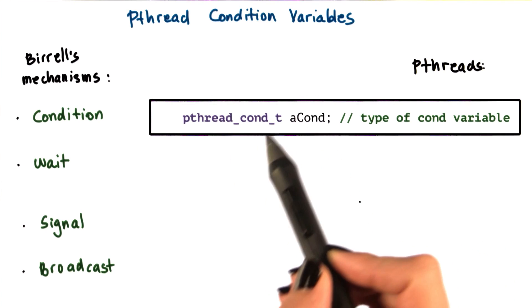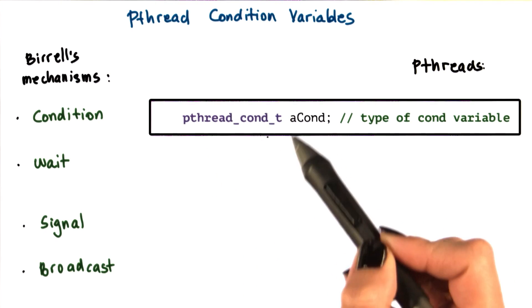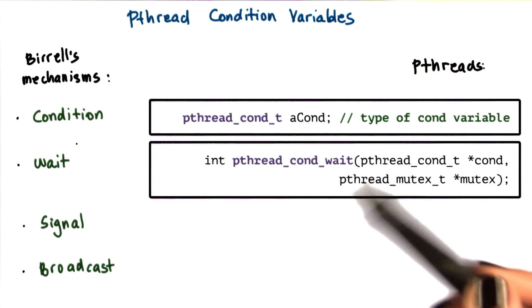In pthreads, condition variables are represented via the designated condition variable data type. The remaining operations align really well with Beryl's mechanisms.